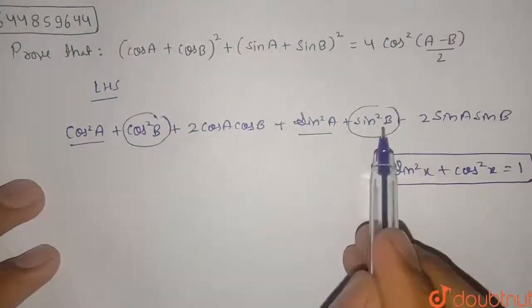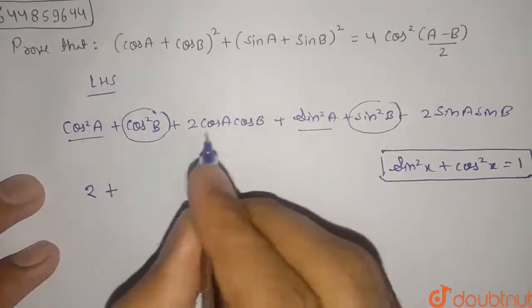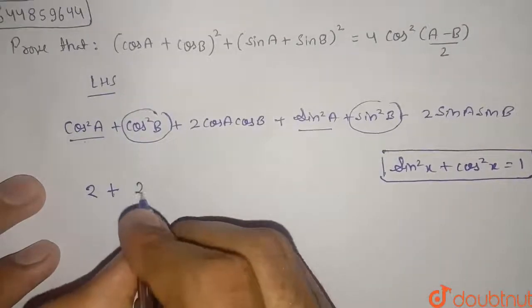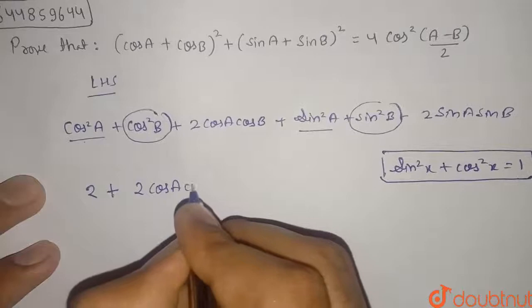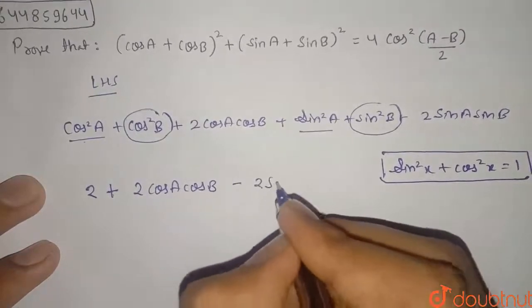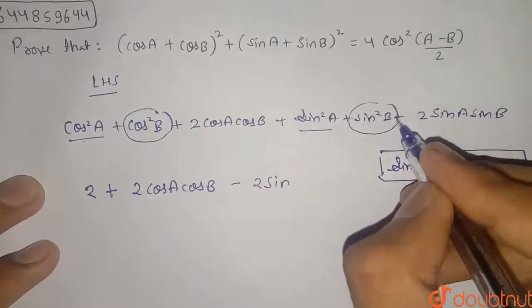So I will use this identity here for cos² A + sin² A and for cos² B and sin² B. So this will be 1 for this and 1 for this. So it will be 2 plus this term and this term.